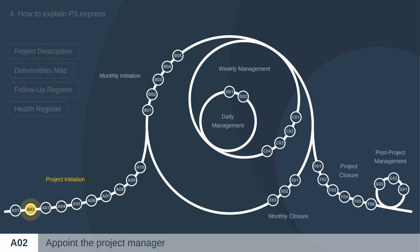After that, key team members are appointed — those who will work on the project if it goes ahead. We want them officially appointed at this stage because we need them to contribute to the initiation. The result of the initiation will be used by the sponsor and others to decide whether or not to run the project, which is why it's important to do it seriously. People often find it strange to have appointments before there's a decision to run the project — this is similar to Prince2 and worth explaining carefully.